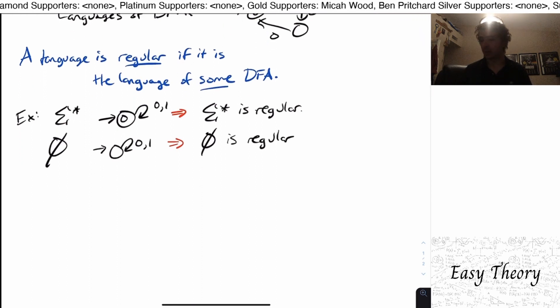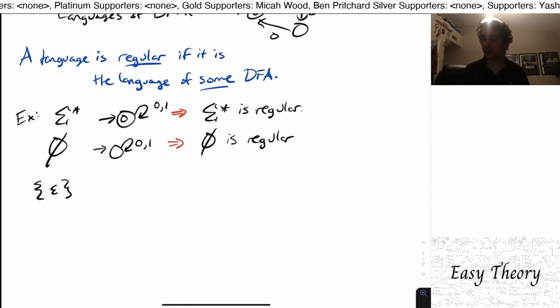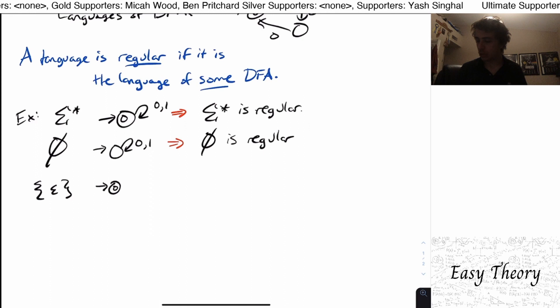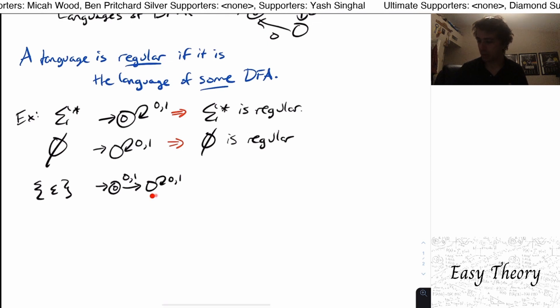A little less trivially, we could say have the language containing a single string, the empty string. And in order to make a DFA for that, we need two states, it turns out. And what we can do here is to do something like this. So instead of having one state, we have two states.